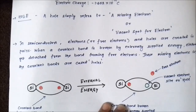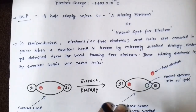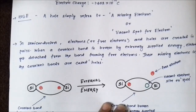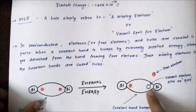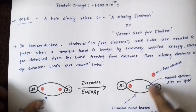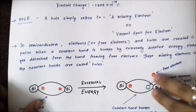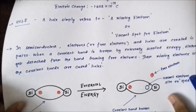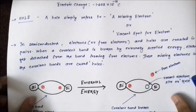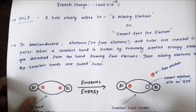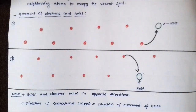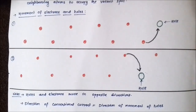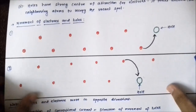This process goes on continuously — it attracts neighboring electrons to occupy the spot, then again becomes empty, gets filled by some other electron, becomes empty again. This is how an electron-hole pair is generated — a free electron and a hole — by the breaking of a covalent bond when external energy is applied.